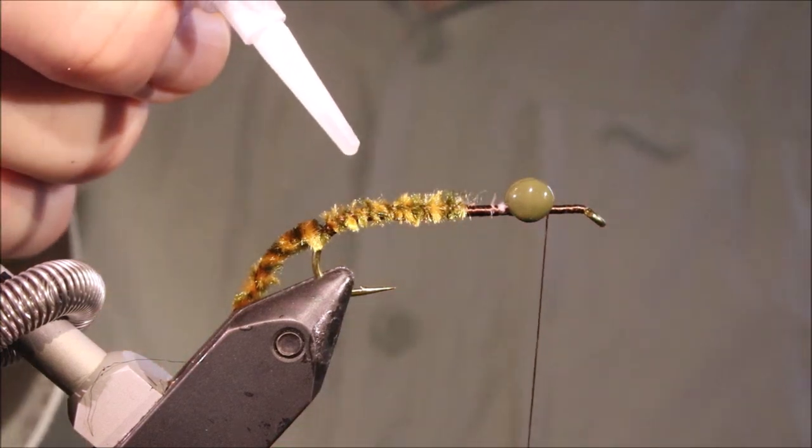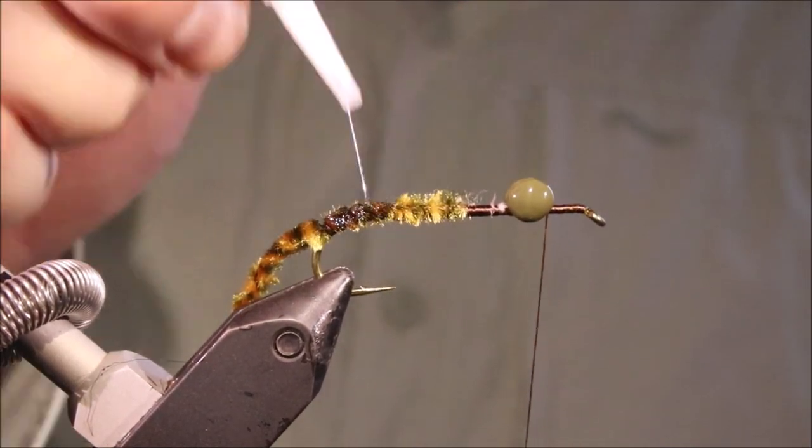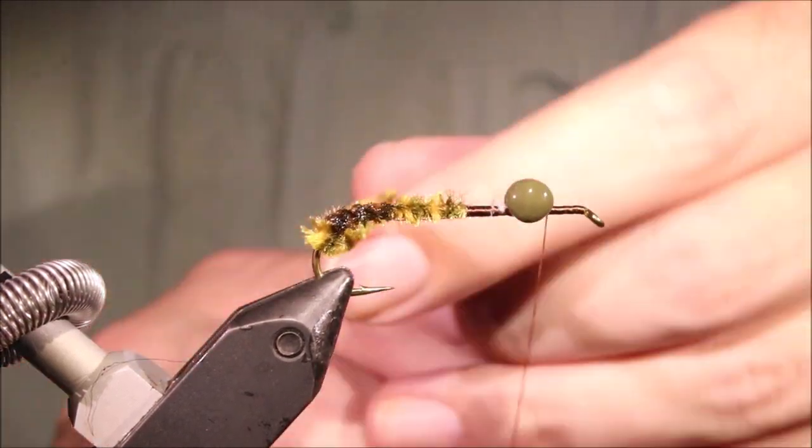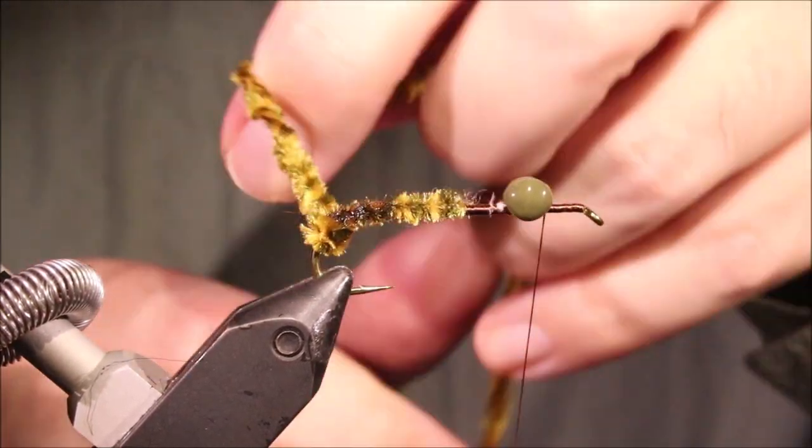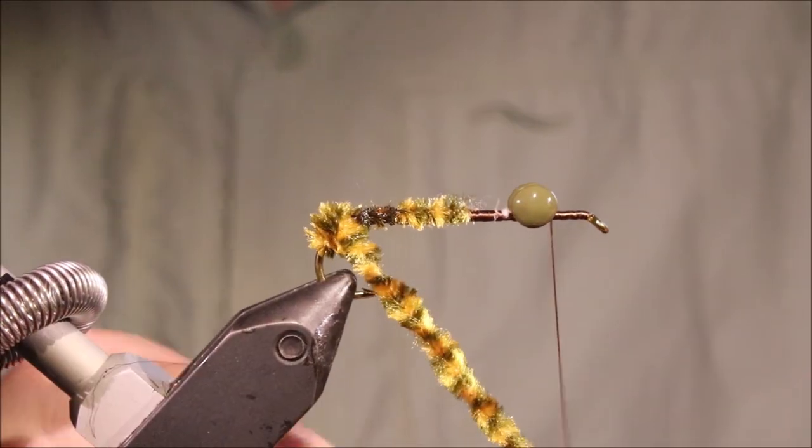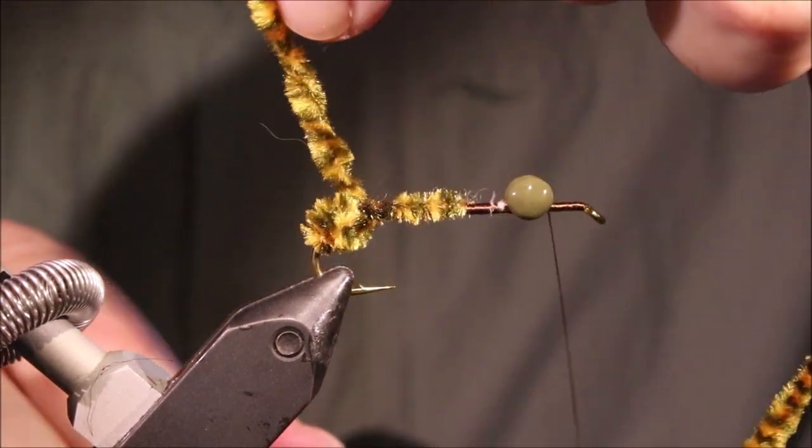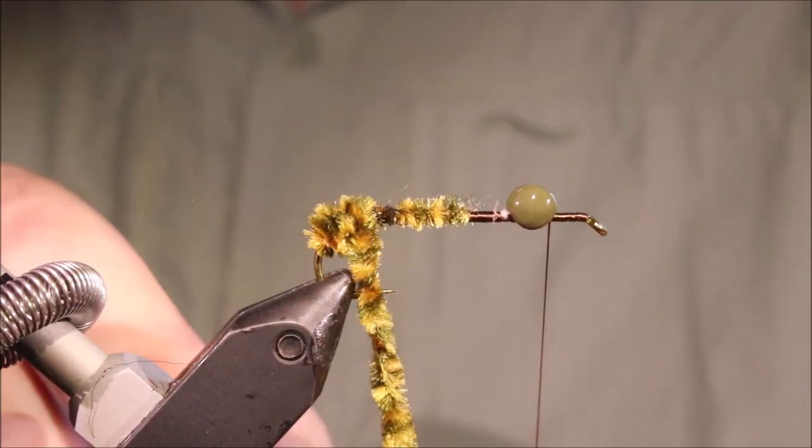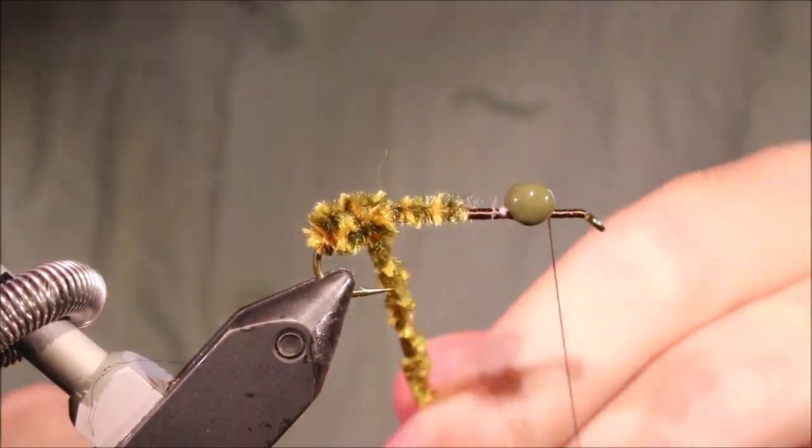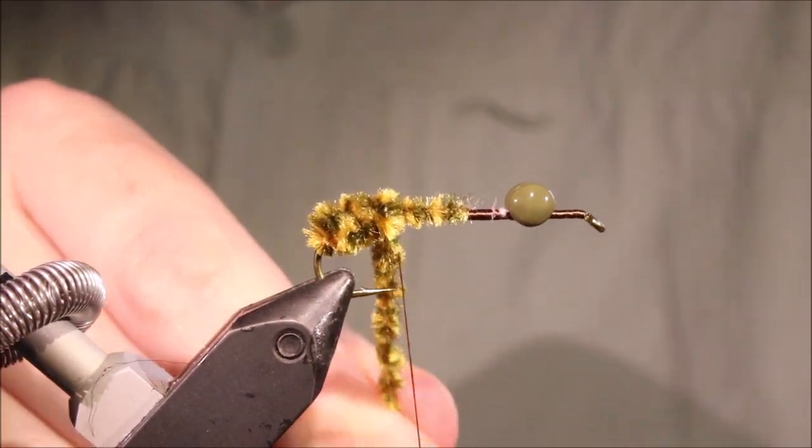Now, for durability, I'm going to get a wee bit of gel super glue, stick it on here, and then build up this rear section right around the bend. Let the chenille turns sort of overlap each other, you're nearly tying on top of the previous wrap and come along until you get to the hook point.